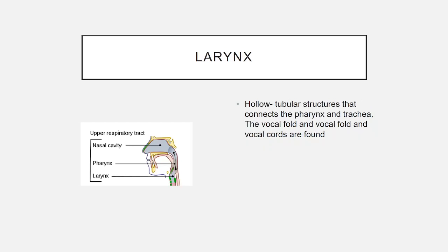The larynx consists of hollow tubular structures that connect the pharynx and trachea. The vocal folds and vocal cords are found here.